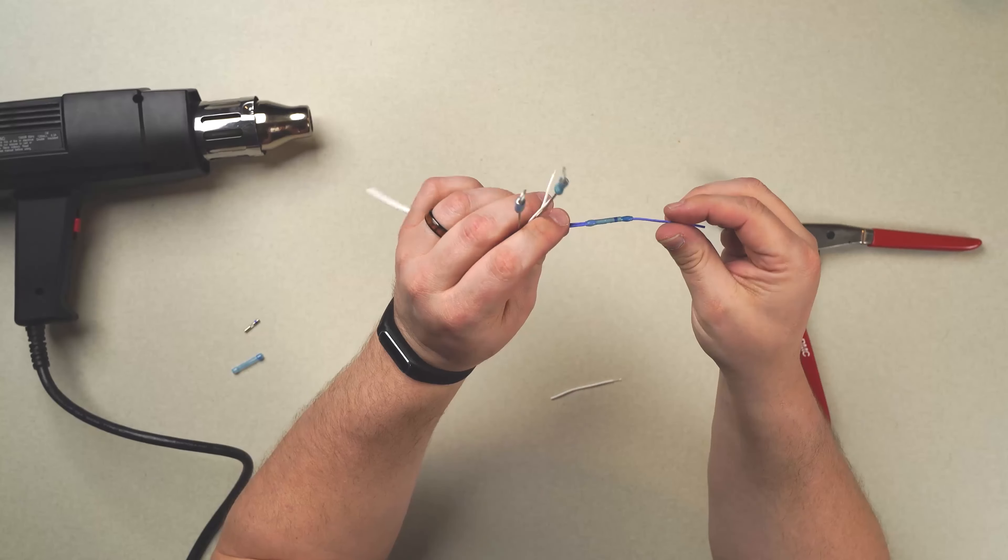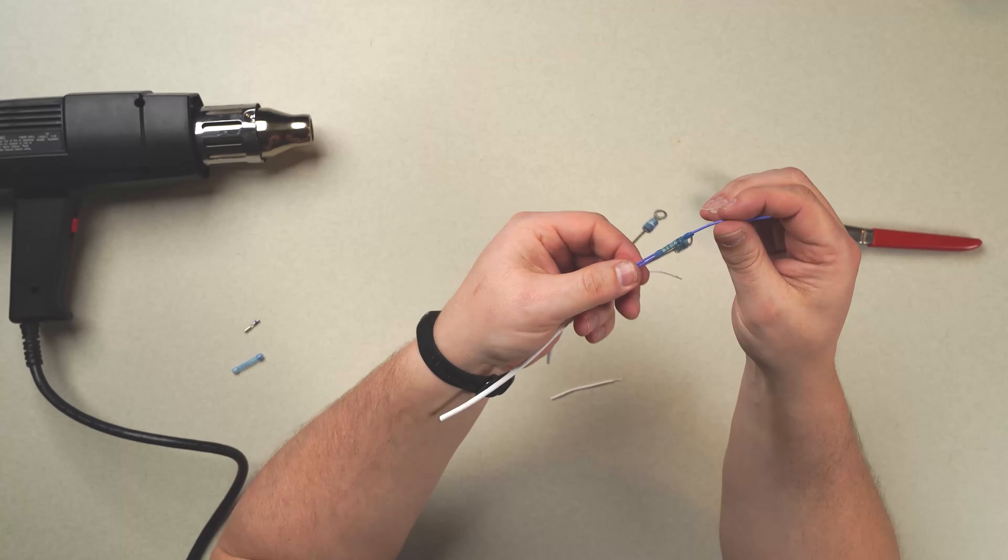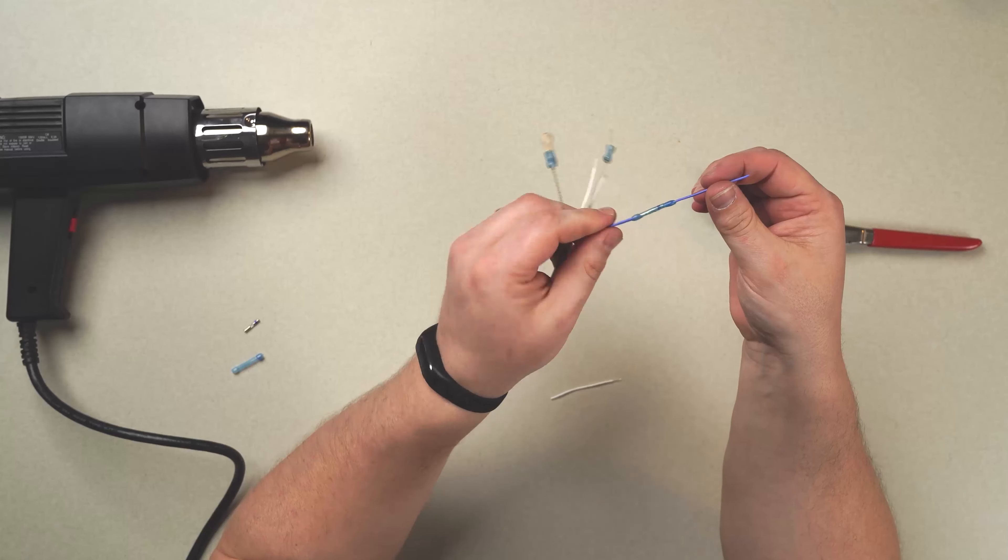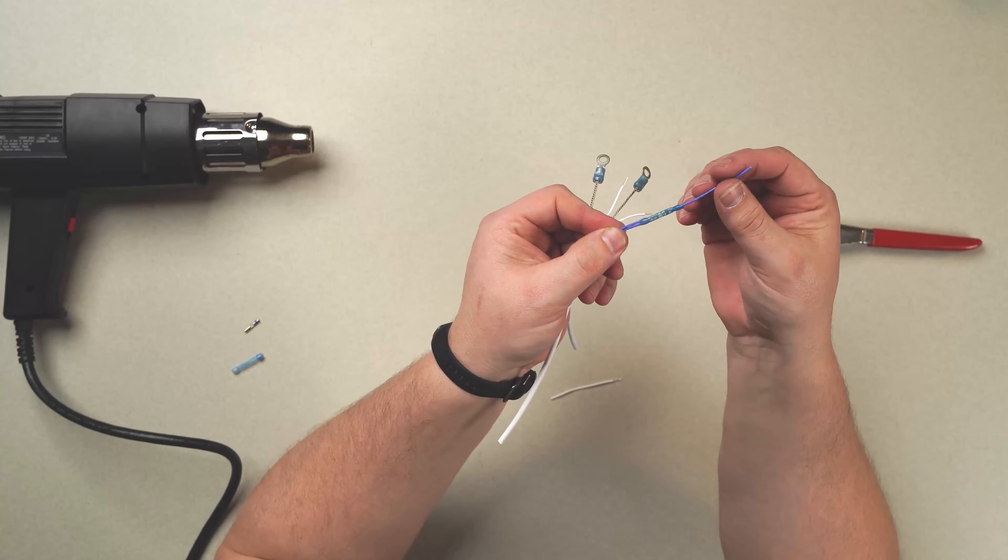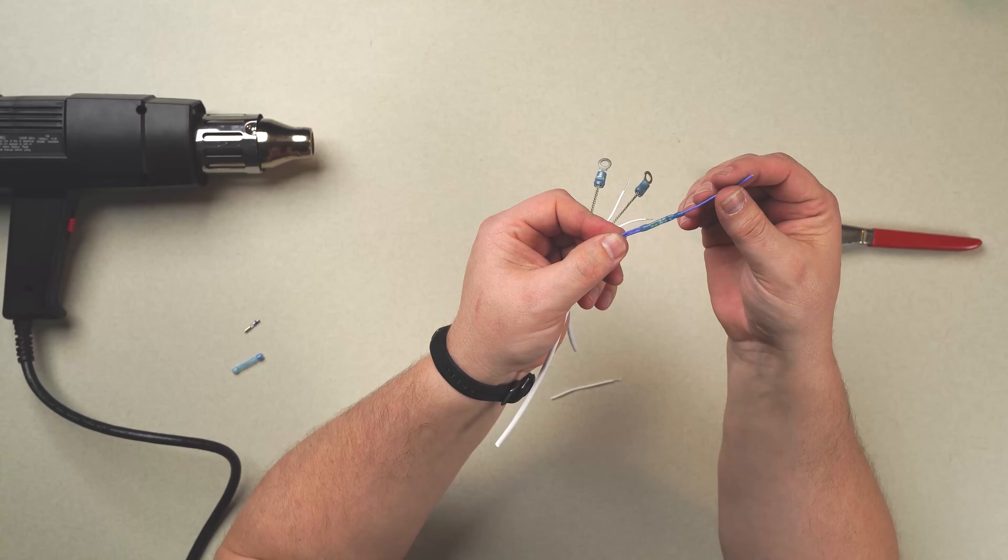Now while we applied our heat, we moved it around to apply it evenly so we didn't burn or discolor the sleeve. You can see we fully melted both ends, therefore providing us with that environmental seal.